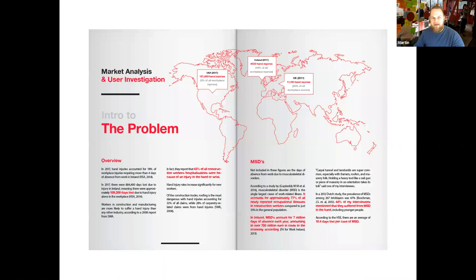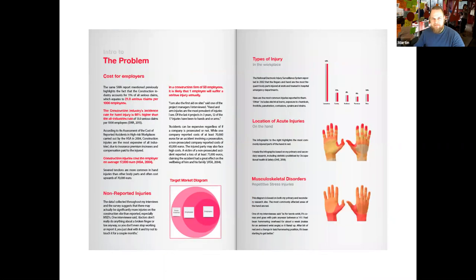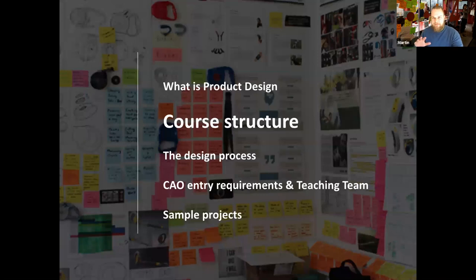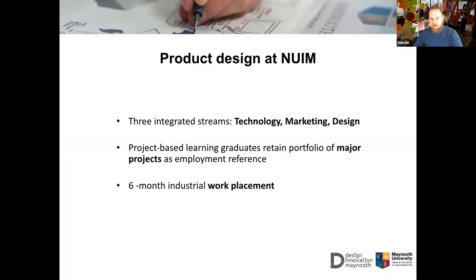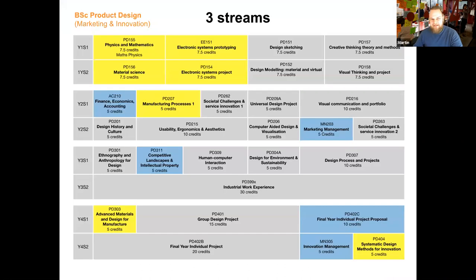This is an example from Shane McCann, one of the current fourth year students — you'll see the visual communication is very strong, covering market analysis as well as the user understanding piece. In terms of the particular course structure, the course is broken down into three streams: technology, marketing, and design. You're going to do a number of significant projects and then two final year major projects. You also go on a six-month work placement in third year, or you can do an Erasmus exchange where you go to another university in Europe. This is a four-year degree. The yellow indicates science and technology modules, the grey are design, and the blue are marketing and business modules.